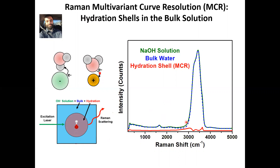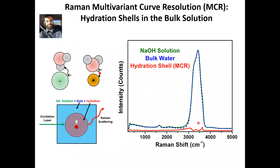The green spectrum is a sodium hydroxide solution, and the algorithm has deconvolved that solution into something that looks like pure water, where this is the giant intensity from the OH stretch. This little red spectrum is the hydration shell. With the ability to pull out such small signals from the bulk solution, we can systematically look at a large range of chemical systems.